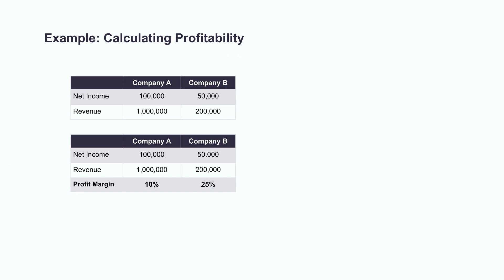Now we've leveled the playing field and can compare these two companies more effectively. Remember, investors are usually looking for companies with higher profit margins because this means the company is keeping a larger percentage of profit in their pockets. When we look at the two companies here, we can see that even though company B has less profit in total dollars, they are much more profitable than company A based on their size. For every dollar of revenue that company A generates, they're keeping 10 cents in their pocket. However, for every dollar of revenue that company B generates, they're keeping 25 cents in their pocket. While we would want to do more analysis taking into account additional ratios, based on this analysis alone, company B is showing signs of being the more profitable option for investors.